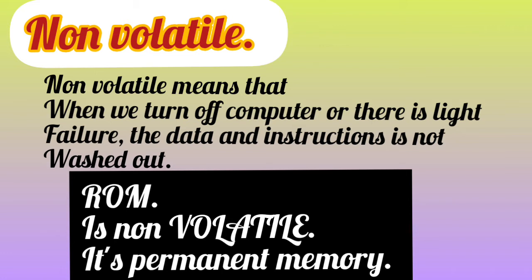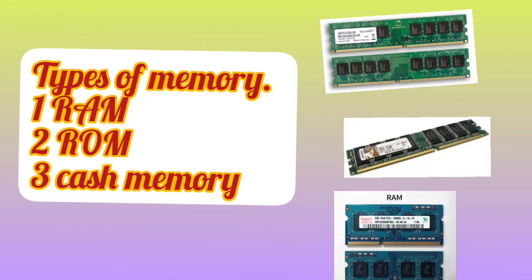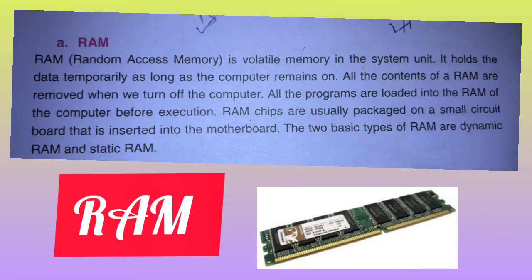If the power goes or we turn off the computer, the data remains in ROM. The types of memory are RAM, ROM, and cache memory. RAM stands for Random Access Memory — it is volatile memory. It is located in the system unit and holds data temporarily as long as the computer remains on. All contents of RAM are removed when we turn off the computer.